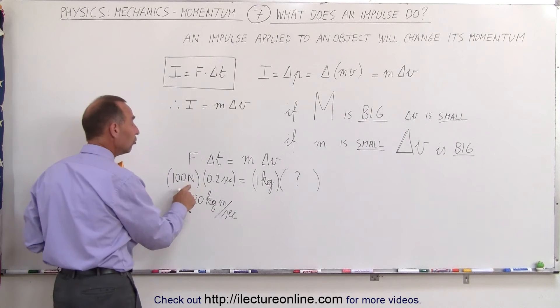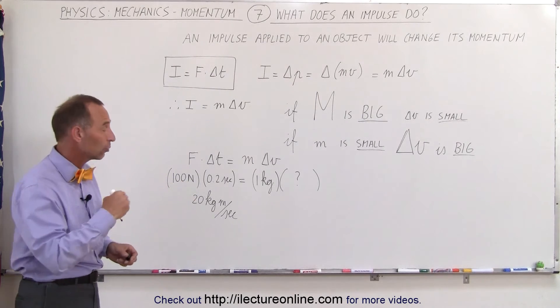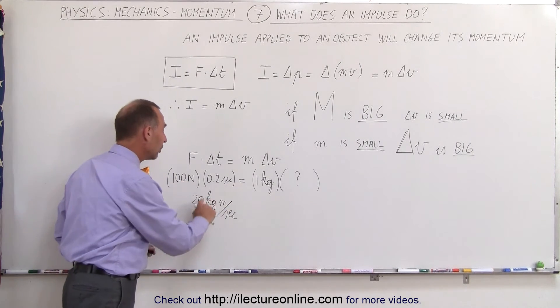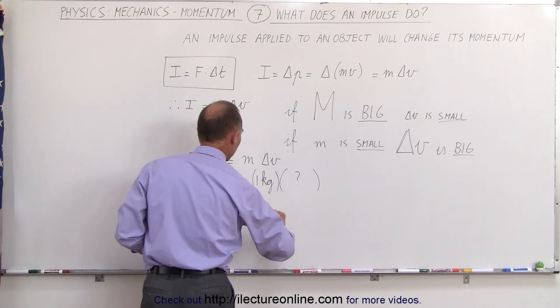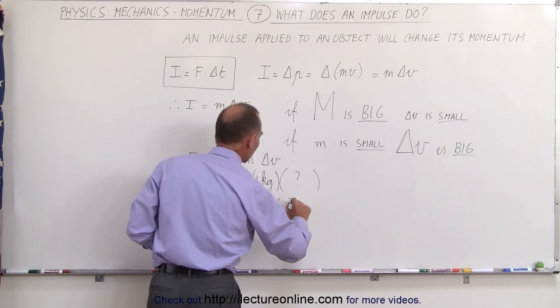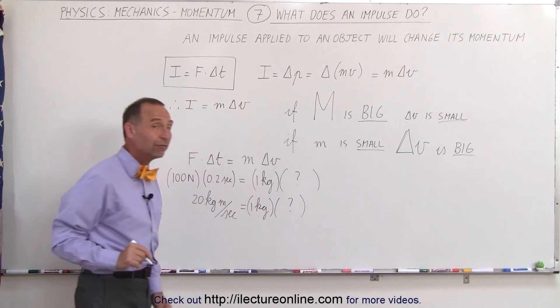So we multiply newtons, which is kilograms meters per second squared, times seconds, and we get kilograms meters per second. And that will be equal to 1 kilogram multiplied times the change in the velocity, which is what we're looking for.